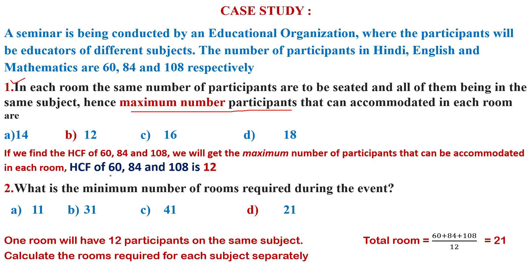So what will be the HCF of 60, 84, and 108? By the prime factorization method, it is 12. Option B is correct.